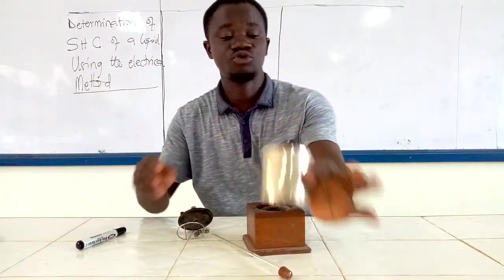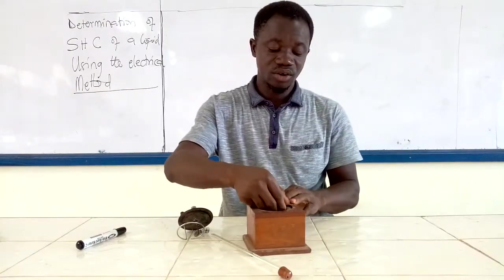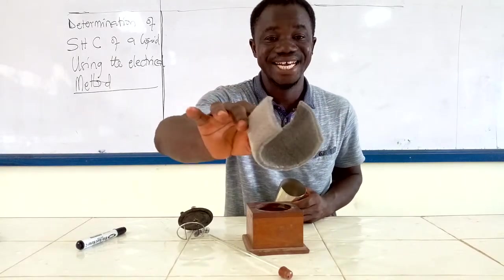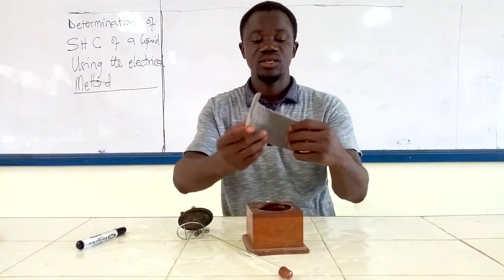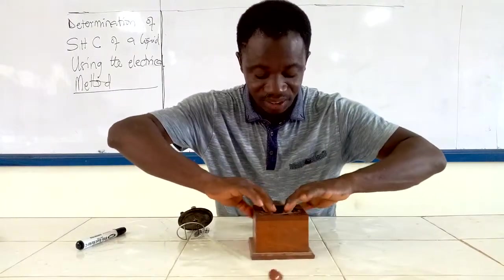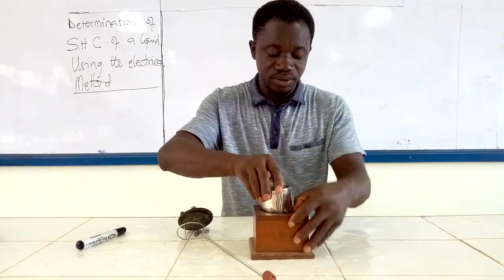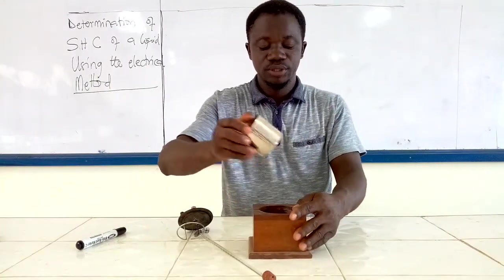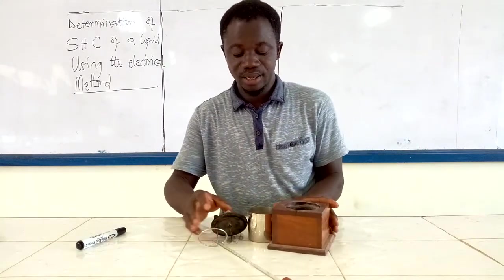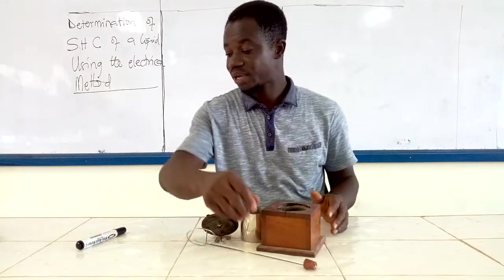Then I have the actual calorimeter. The calorimeter is always fitted inside a substance which contains lagging. This is a lagging — it is an insulating substance that prevents heat loss to the surrounding. That is one of the precautions you need to look at. That is how the electrical method calorimeter looks, and all the apparatus that make it up.